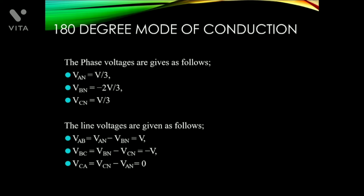Now the phase voltages and line voltages of the 180-degree mode of conduction. The phase voltages are: Van = V/3, Vbn = -2V/3, and Vcn = V/3. The line voltages are: Vab = Van - Vbn = V, Vbc = Vbn - Vcn = -V, and Vca = 0.